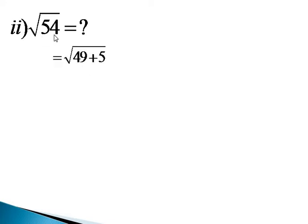We have to write down the nearest perfect square to 54, that is the square root of 49. So that is 49 plus 5.